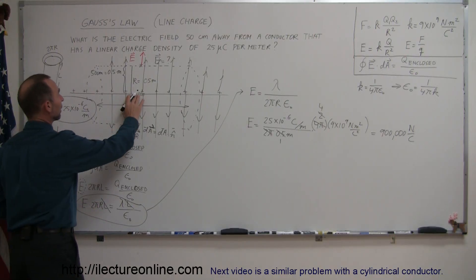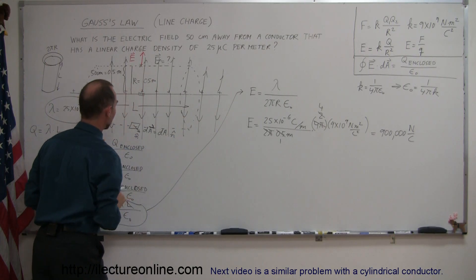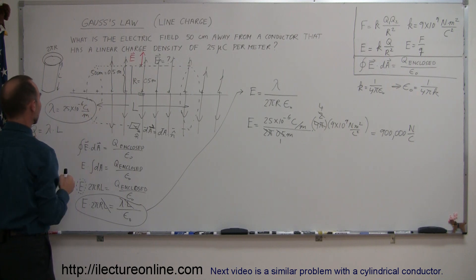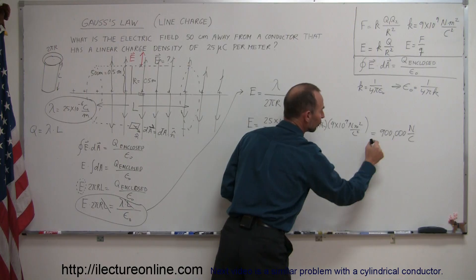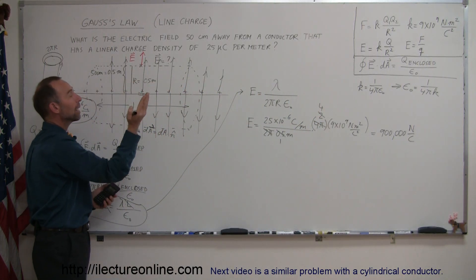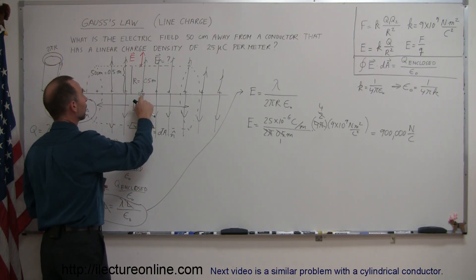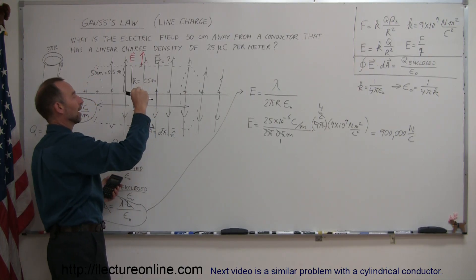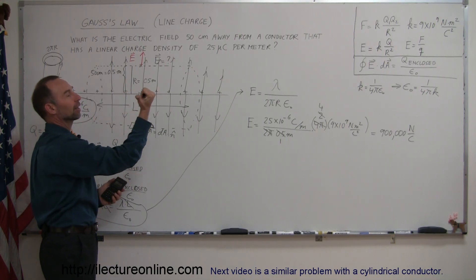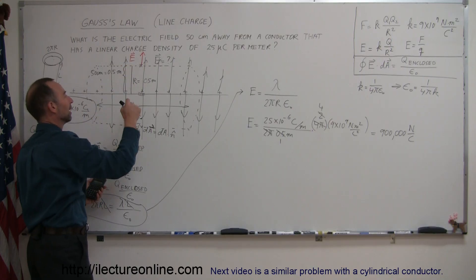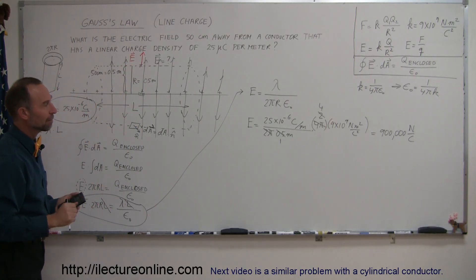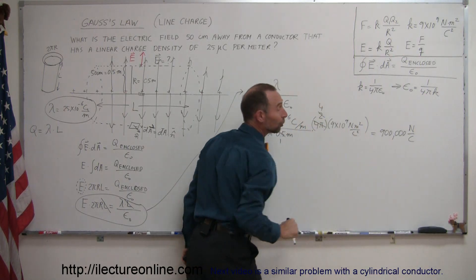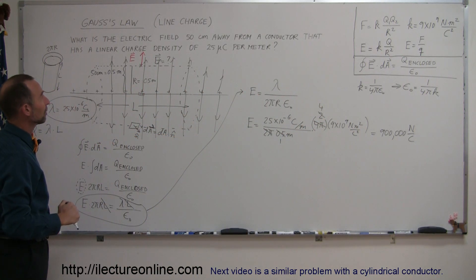The answer is: the electric field strength at a distance of 0.5 meters away from a conductor with a stationary charge density of 25 microcoulombs per meter is equal to 900,000 newtons per coulomb, directed radially away from the conductor. If the point is directly above, the field is upward; directly below, downward; 0.5 meters in front, the field is away from us; 0.5 meters into the board, the field goes into the board at that same magnitude.